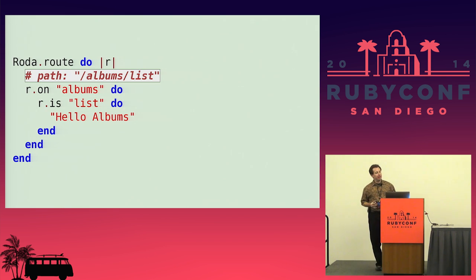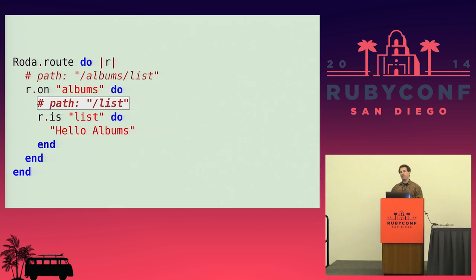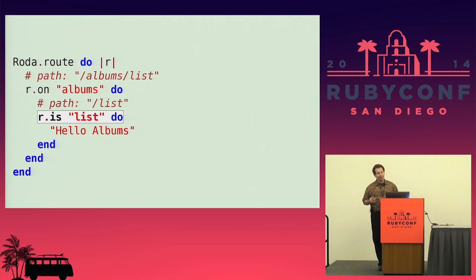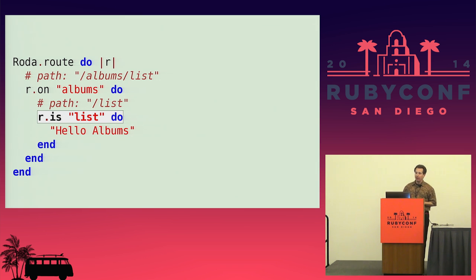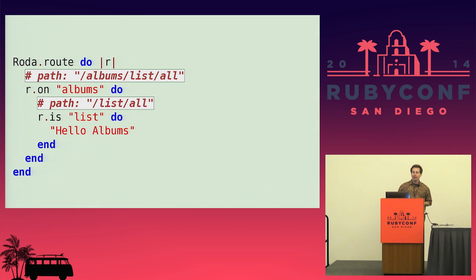The reason this works is that the request path is being modified as the request is being routed. When a request for 'albums/list' comes in, when R.on albums matches, it consumes 'albums' from the front of the request path, so inside the R.on block the path is 'list'. R.is matches only if all matchers match and the request path is completely consumed. If you get a request for 'albums/list/all', R.on still matches but the path inside is 'list/all' — since R.is 'list' doesn't completely consume the request path, Roda returns an empty 404 response.